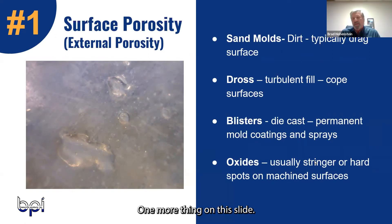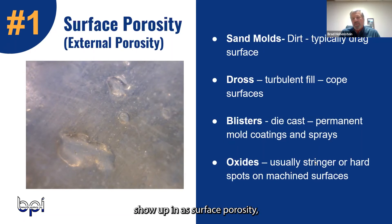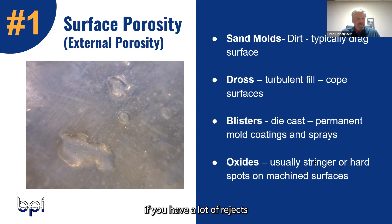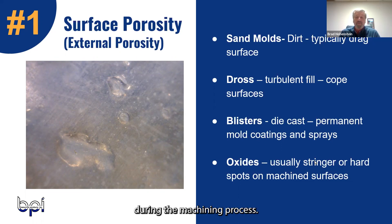One more thing on this slide: the oxides show up as surface porosity, but they're not really porosity until you machine the part. The oxides will be hard and they'll tend to tear. So when you're machining, if you're having a lot of rejects on the surface, those typically are oxides — they'll pull out during the machining process.